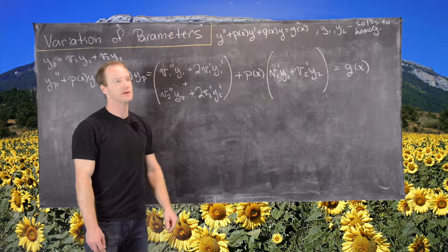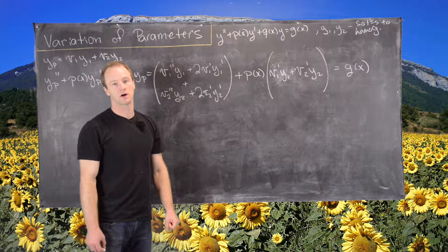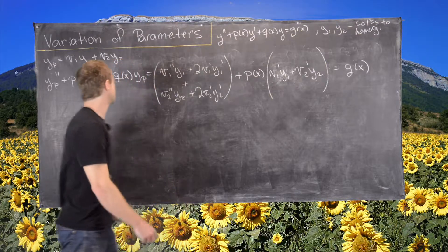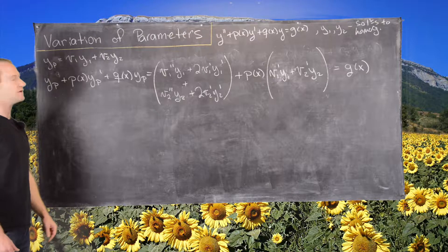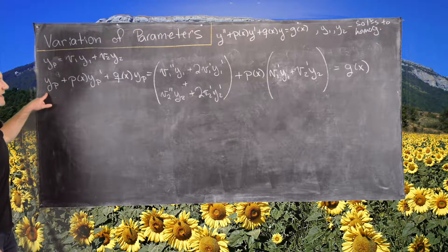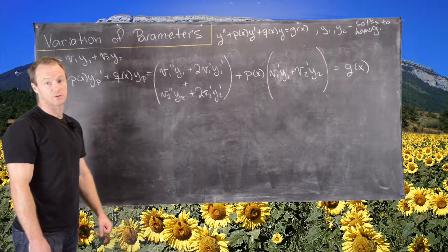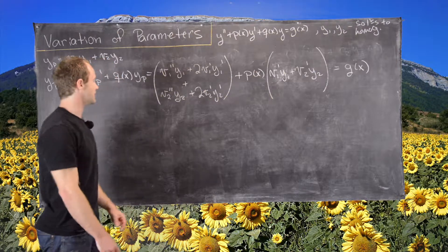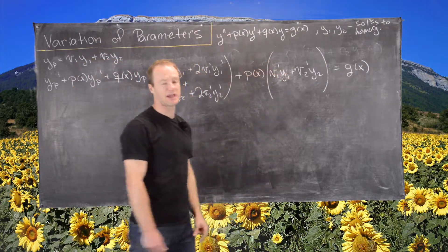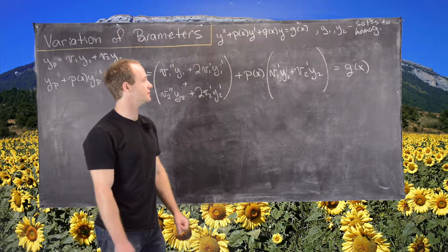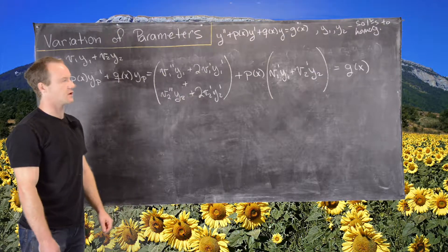To summarize: we have the differential equation y″ + p(x)y′ + q(x)y = g(x), with y1 and y2 linearly independent solutions to the corresponding homogeneous equation. We take yp = v1·y1 + v2·y2, where v1 and v2 are functions to be determined. After plugging in and using the homogeneous solutions property, what remains involves terms from yp″ and yp′ set equal to g(x), while the zero-derivative term vanished due to the homogeneous assumption.